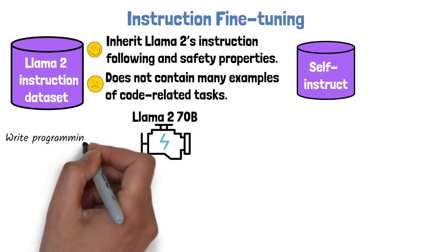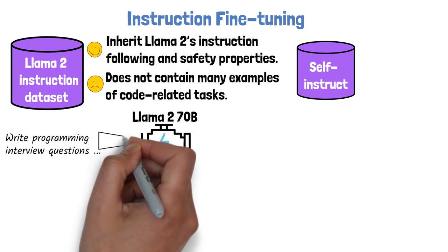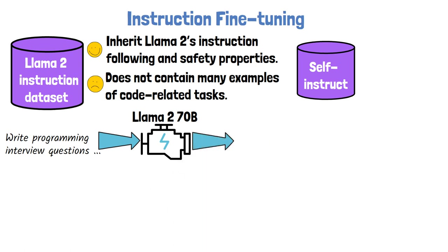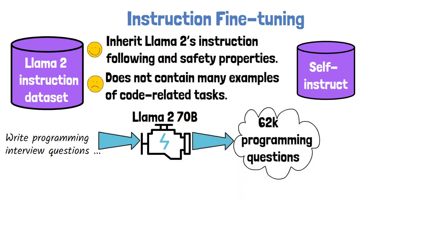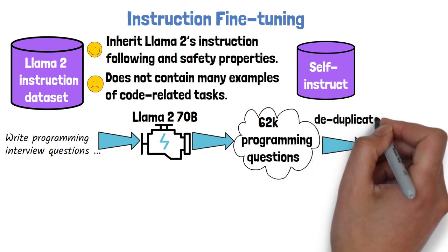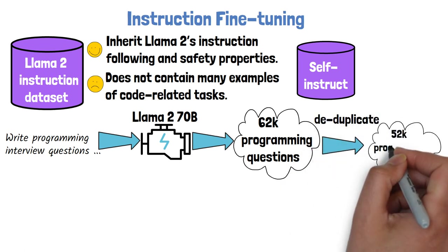First, we provide Llama 2 70B with a prompt to write programming interview questions. With this step, we get 62,000 interview-style programming questions, and after removing exact duplicates, we end with 52,000 questions.